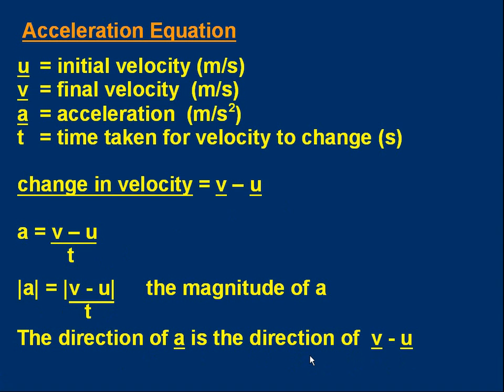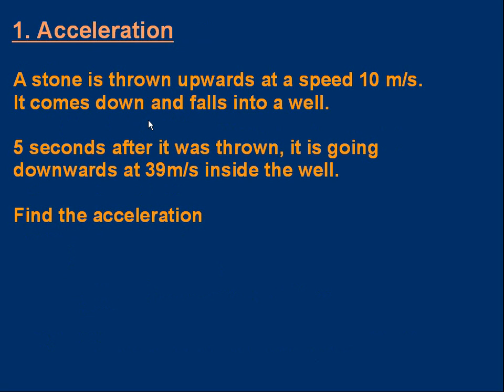Let's do some problem solving. First one. A stone is thrown upwards at a speed of 10 meters per second. It comes down and falls into a well. Let's show that with a simple diagram. Thrown upwards at 10 meters per second, reaches a top, comes down, but it falls down a well. Five seconds after it was thrown, it is going downwards at a speed of 39 meters per second. And it's inside the well now. And you're being asked to find the acceleration. So, you should pause the video and try working that one out for yourself.